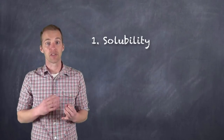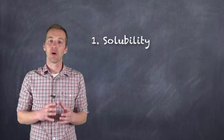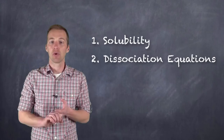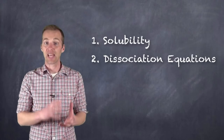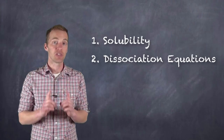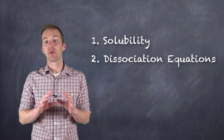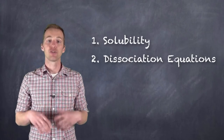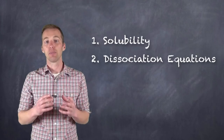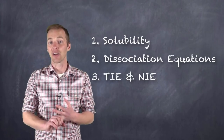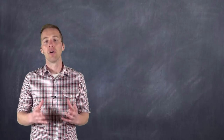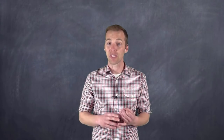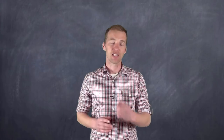Hopefully after watching this video, you have a better understanding of solubility and the factors that affect solubility — like temperature — but also how we can express soluble compounds in the form of a dissociation equation, and ultimately how we can express reactions that occur in solution, specifically those that produce a precipitate, by only focusing on the ions that produce that precipitate. That is, you're able to take a balanced chemical equation and convert it to a total and ultimately net ionic equation by eliminating spectator ions — those ions that don't take part in the reaction. And hopefully you have a better appreciation for what a water softener is, why it's necessary, and how it works. Thanks for watching.